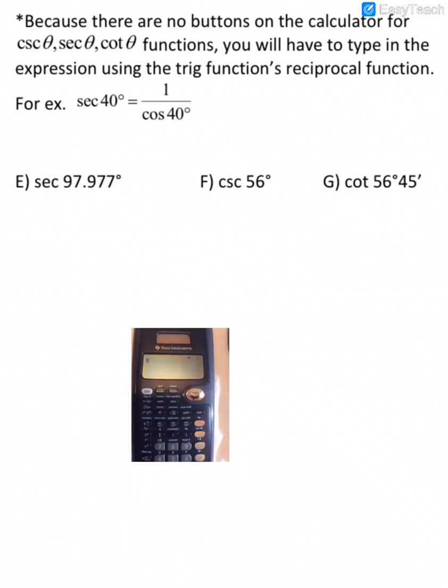Because there are no buttons on the calculator for cosecant, secant, and the cotangent functions, then you have to type the expression using the trig function's reciprocal function. So for example, if we needed to do the secant of 40 degrees, we would put it in as 1 over the cosine of 40 degrees.